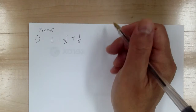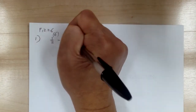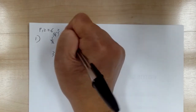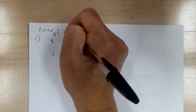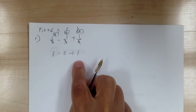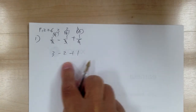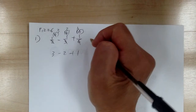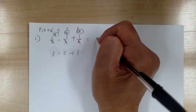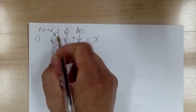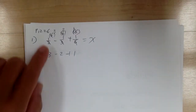A lot of people would multiply by six and cancel out, getting three minus two plus one. They cannot do that. This is not an equation. You can only do that if it's an equation, like equal to x or something. You can only multiply if it's an equation.